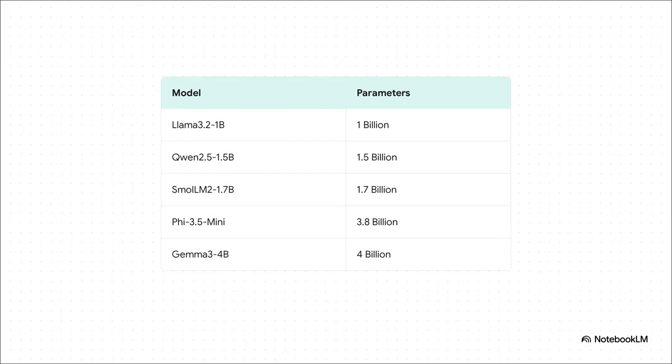And here are some of the current stars of the show. You've got models from all the big players. Meta, Alibaba, Microsoft, and Google. You can see models like Phi-3 Mini and Gemma are packing billions of parameters into these small, efficient packages that are fine-tuned for things like complex reasoning or writing code.